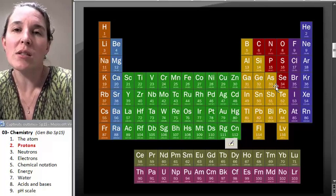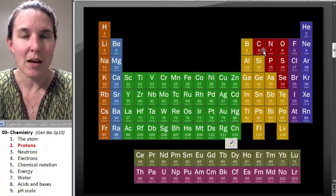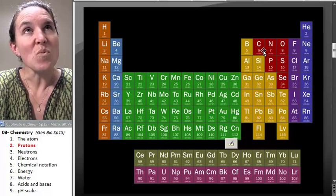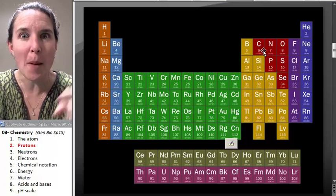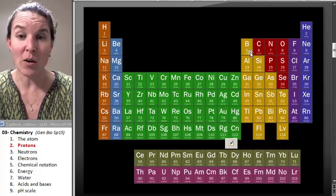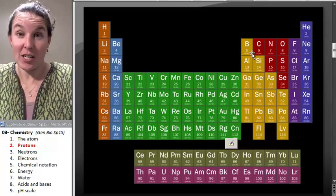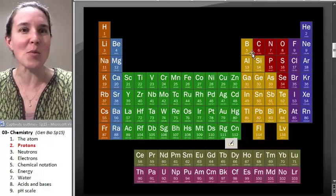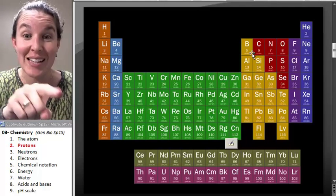How many protons are in a carbon atom? Six. If we took a carbon atom and we took a proton out, is it still a carbon atom? No, because now it only has five protons. I don't care what else you change. The number of protons tells you the atom.